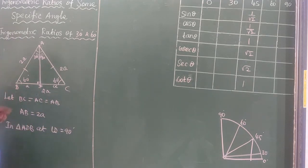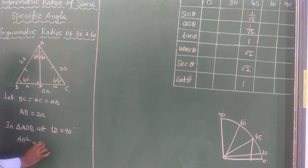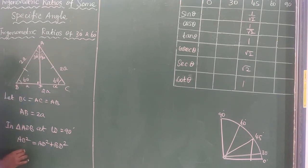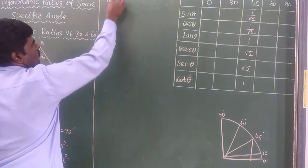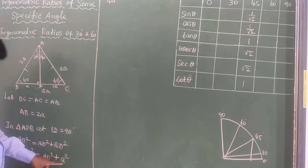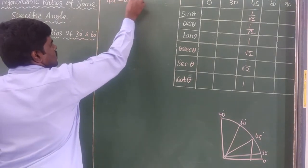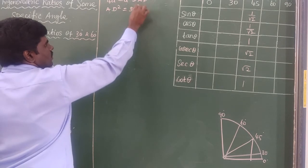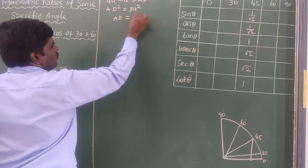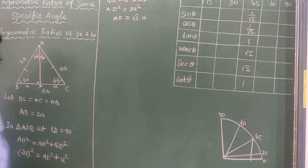Using the Pythagorean theorem: AB² = AD² + BD². We know AB = 2A, so (2A)² = AD² + A². Therefore AD² = 4A² − A² = 3A², and the value of AD is equal to √3·A.